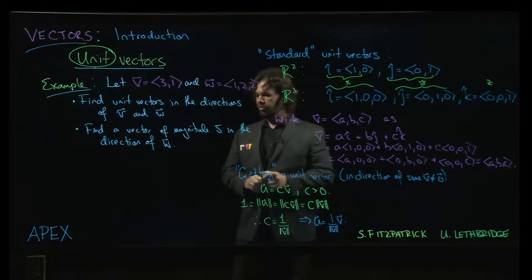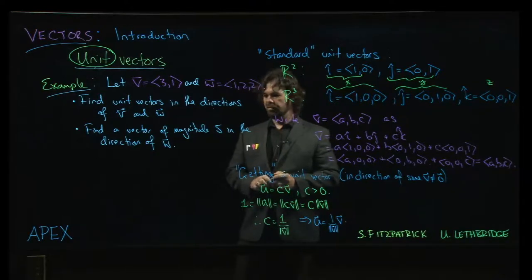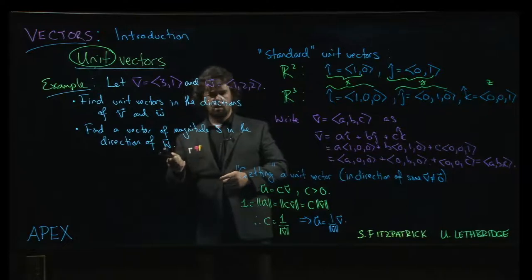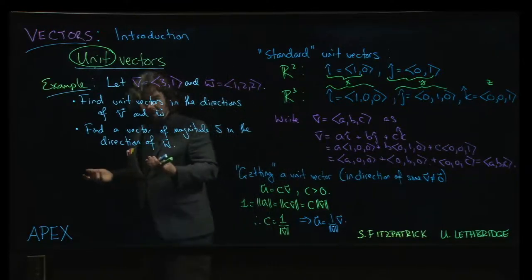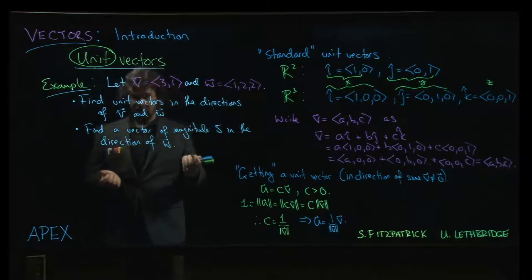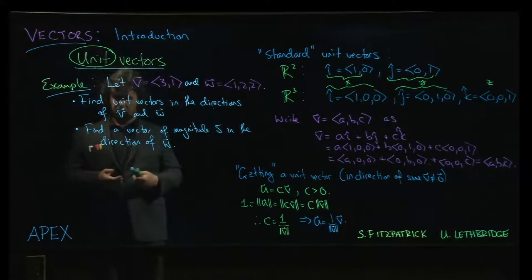And then the next part is to find a vector of magnitude 5 in the direction of w. I think the book says v, but let's do w. Why not? Change it up a little bit. You can see the example using v in the book. Now we'll see w as well. Alright, so starting with the first part.